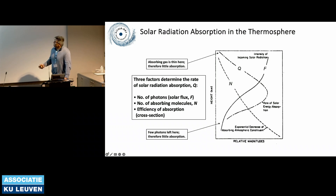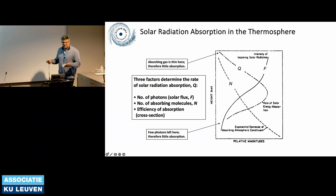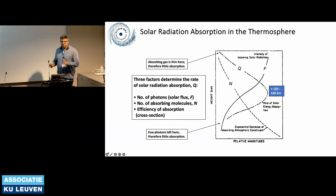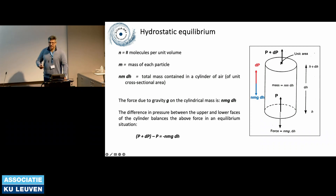Solar radiation absorption was shown yesterday as well. We have a maximum absorption rate sitting at a specific altitude, which is a function of atmosphere constituents. If the atmosphere is very thin, absorption is very low; if it's very thick, everything is absorbed so penetration stops. We get a typical maximum absorption around 120 to 160 kilometers, in the lower thermosphere.